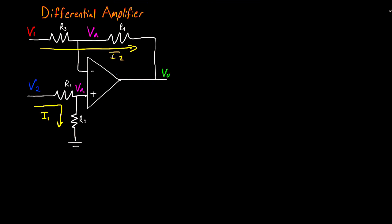In this case, I have four resistors that I need to write equations for. Starting off with R1 and R2, we can say that I1 is equal to V2 minus VA divided by R1. And I1 is also equal to VA divided by R2.